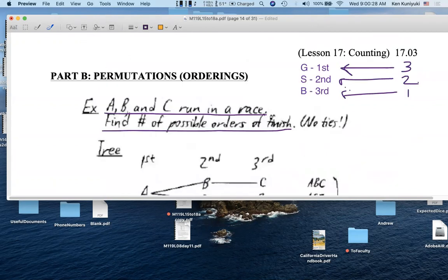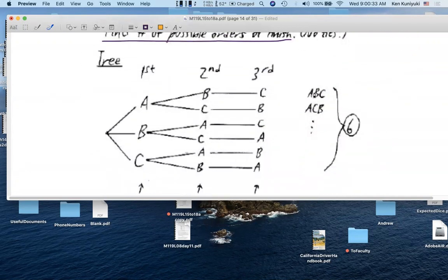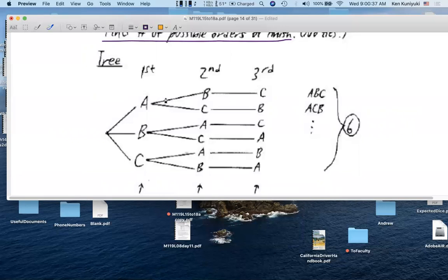So, how many possible full permutations or orderings are there for these three runners? How many possible sequences are there where we cannot repeat? Well, we have A, B, C, A, C, B.